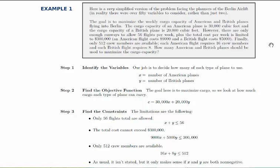Here's the last example in this section on linear programming. This is a very simplified version of the problem facing the planners of the Berlin airlift. Here we're just going to use two variables, but really there were many, many more.